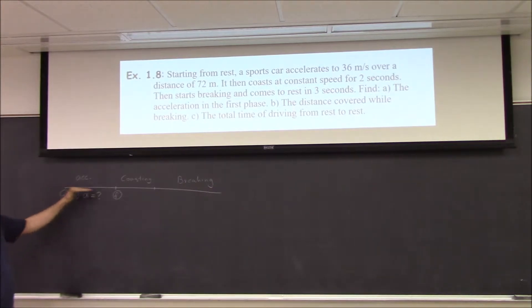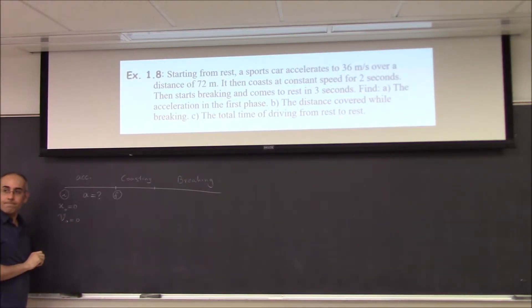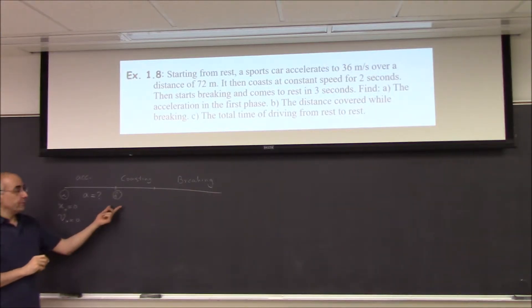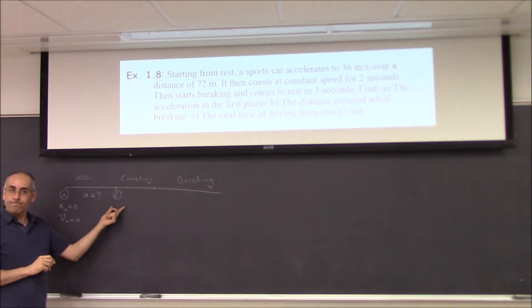And these formulas for constant acceleration motion applies between these two points, right? Let's see, what do we know about the initial situation? I can put the x-axis origin here and say x initial is 0. That's up to me, right? I can set it to be 0. And then what else do I know, do I know the speed here or velocity? 0, because it says from rest, right? So v0 is also 0.